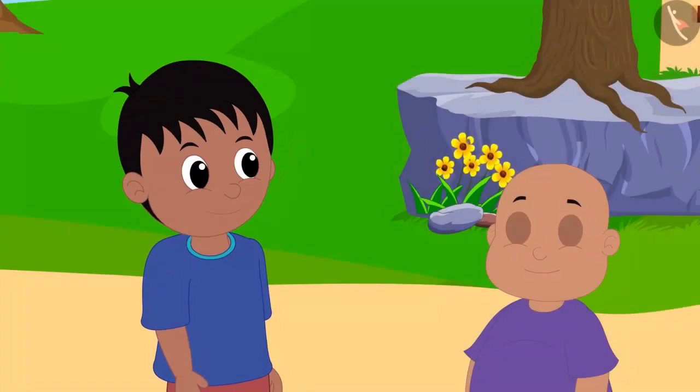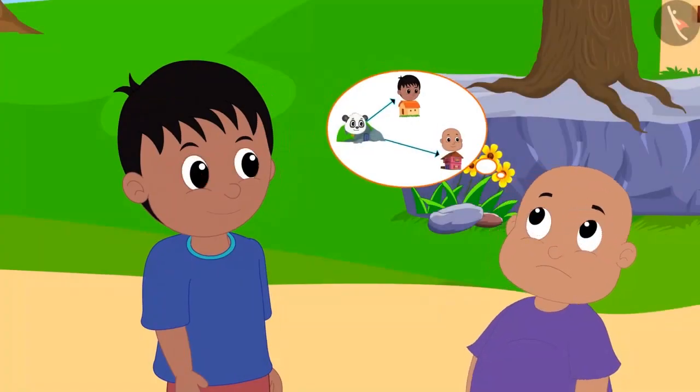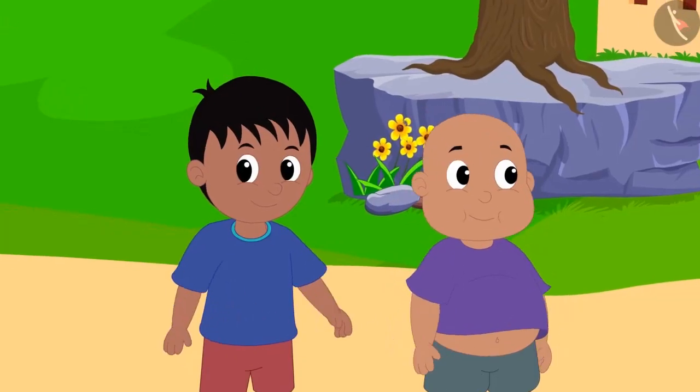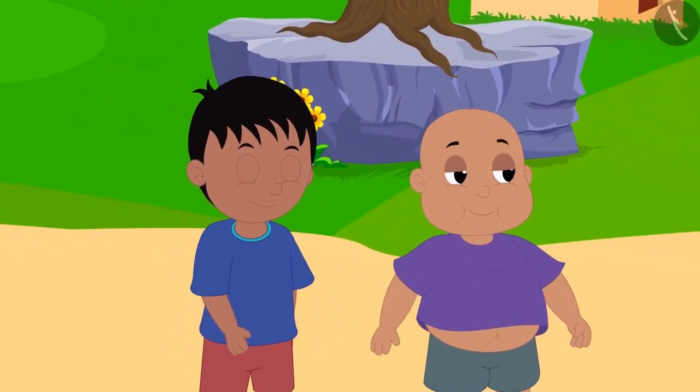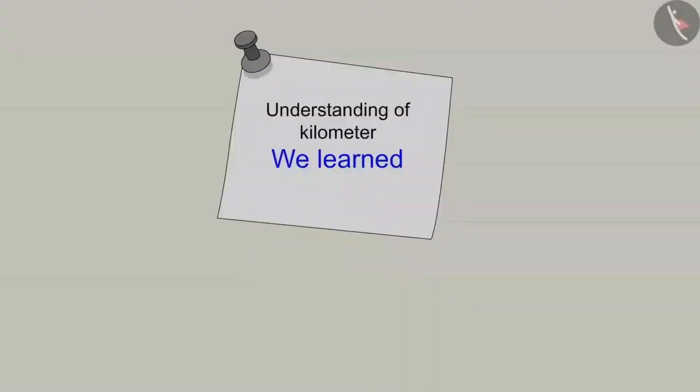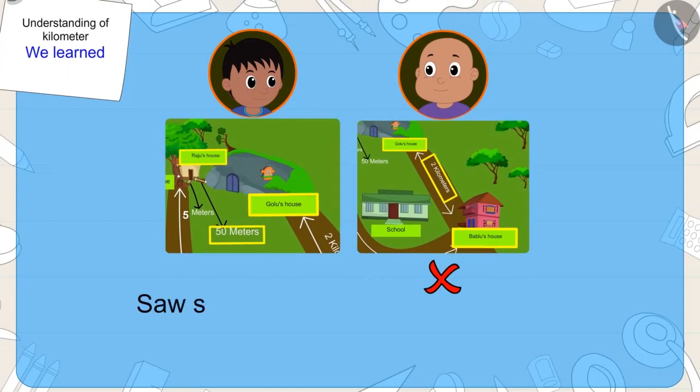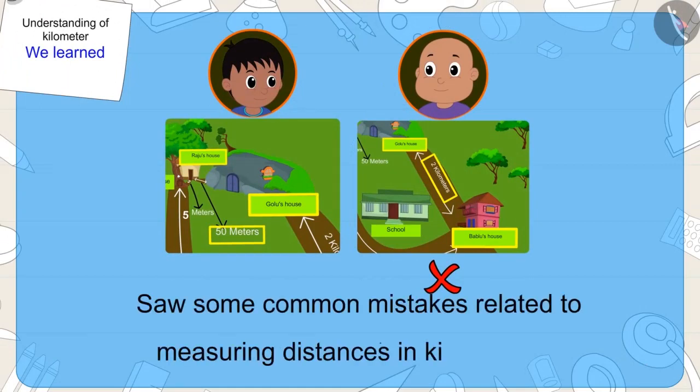Babalu finally understood Raju and both of them went to play at Chanda's house. Kids, in this video, we saw some common mistakes related to measuring distances in kilometers.